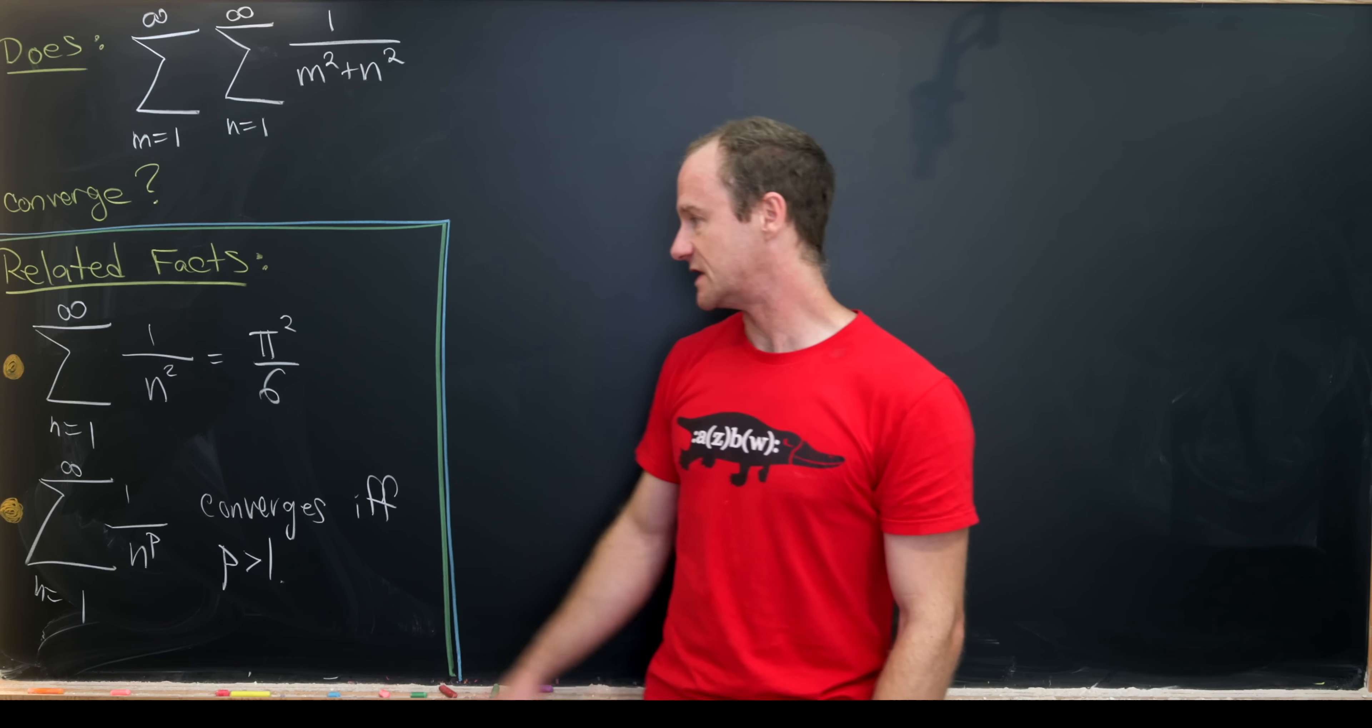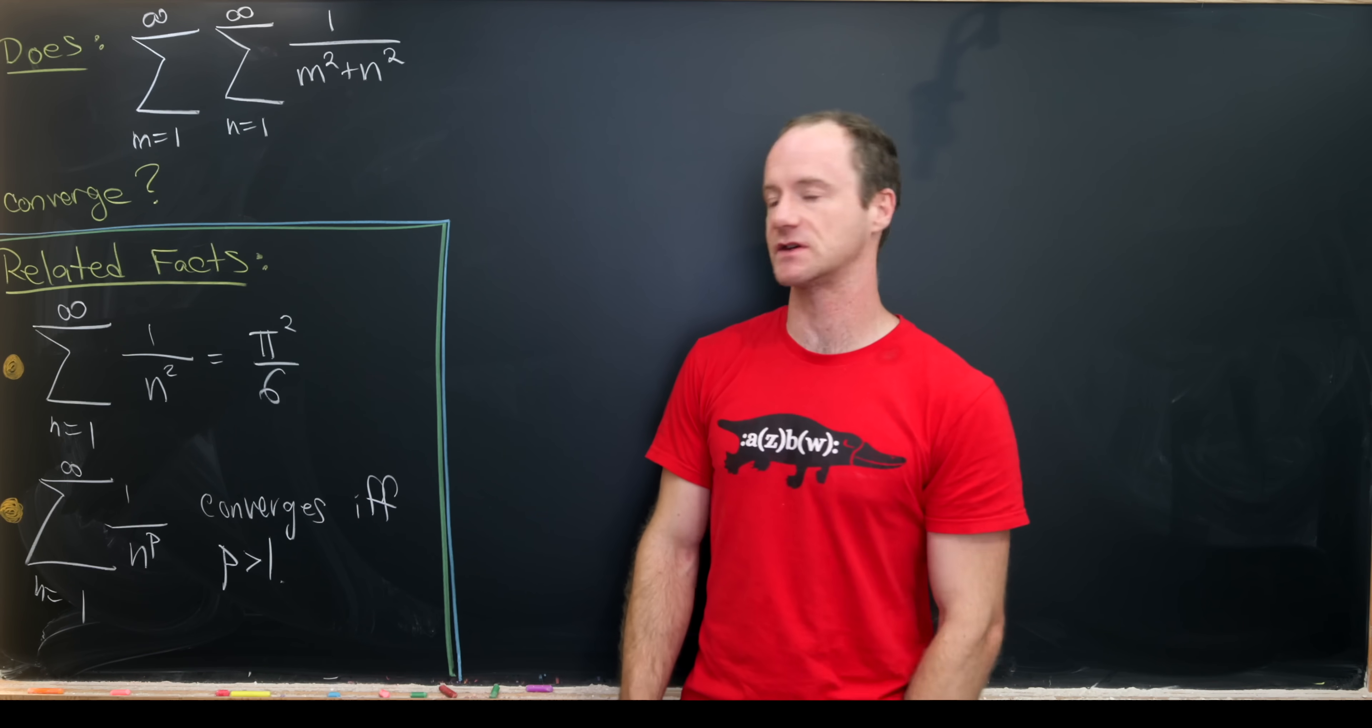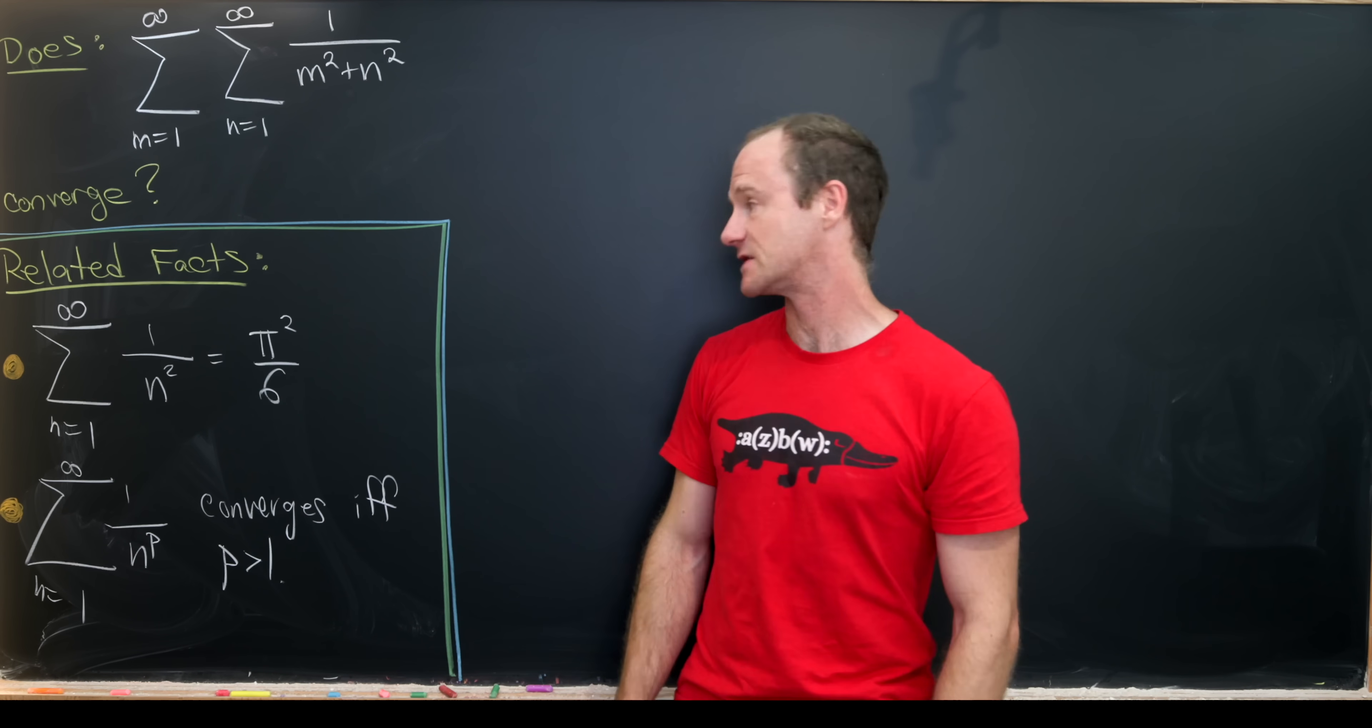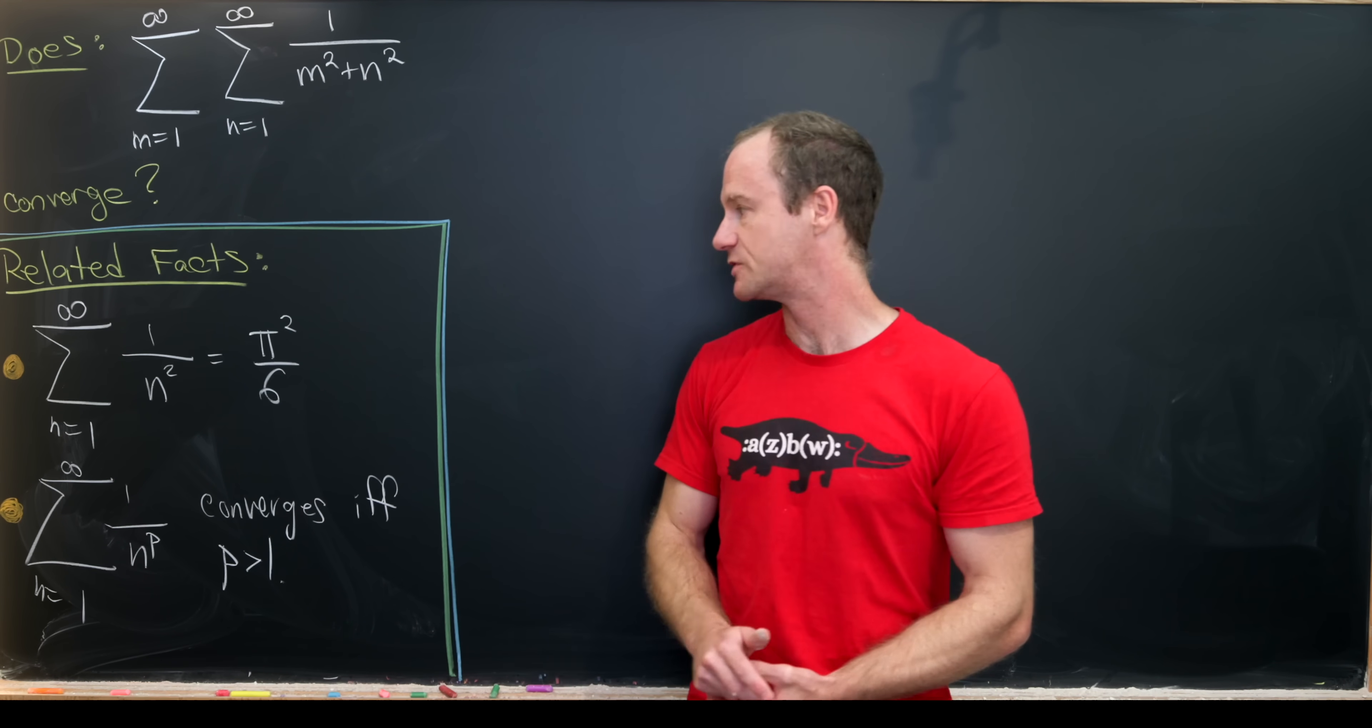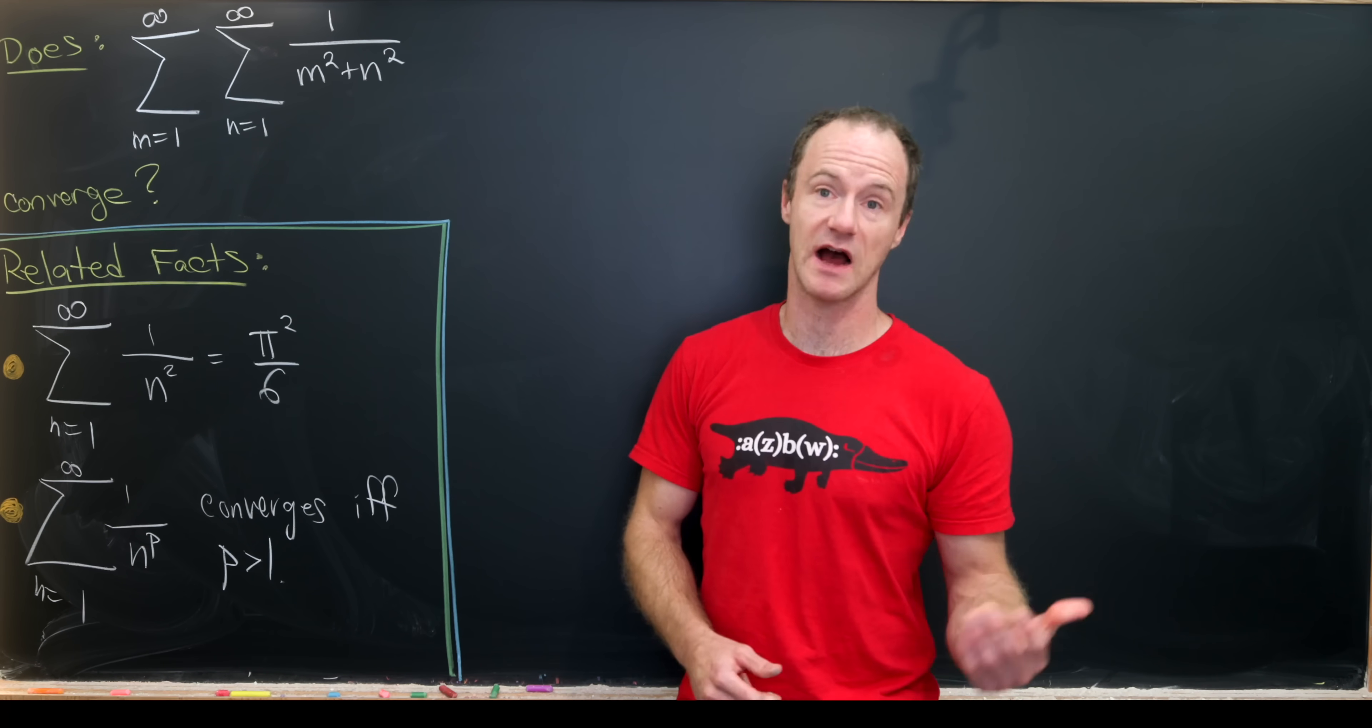The first is the sum of the reciprocal of squares, the single sum. That in fact does converge. That's the famous Basel problem, and that sums to pi squared over 6. I've got some videos in the channel where we derive this result.